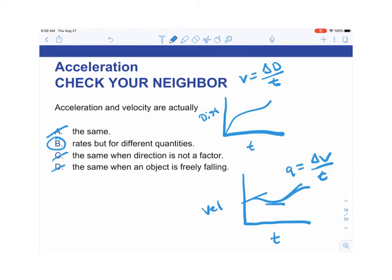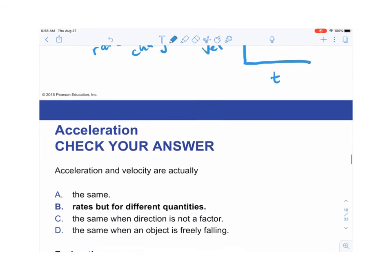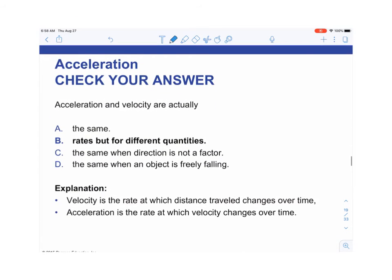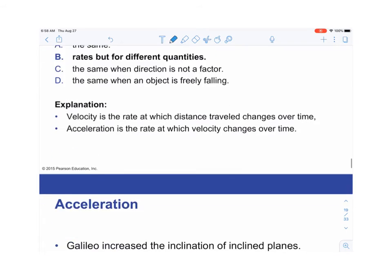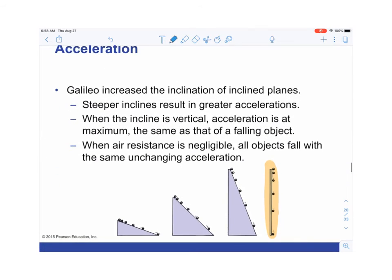Just like we found the slope of a distance-versus-time graph to determine velocity, on a velocity-versus-time plot the slope gives acceleration. To summarize: velocity is the rate at which distance changes over time, and acceleration is the rate at which velocity changes over time.